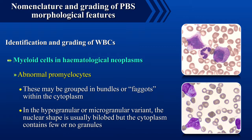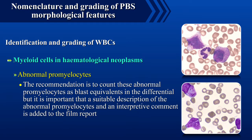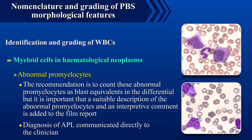In the hypogranular or microgranular variant, the nuclear shape is usually bi-lobed but the cytoplasm contains few or no granules. The recommendation is to count these abnormal promyelocytes as blast equivalents in the differential, but it is important that a suitable description and interpretive comment is added to the film report, and a likely diagnosis of acute promyelocytic leukemia communicated directly to the clinician.